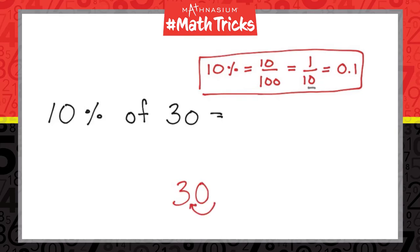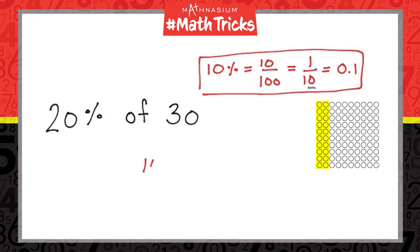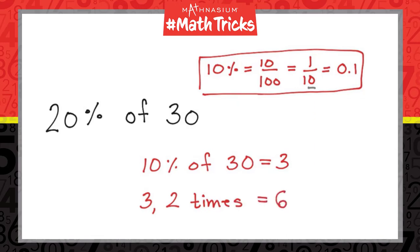10% of 30 is 3. To find 20% of 30, we take double of 10% of 30. 10% of 30 is 3, double of 3 is 6, so 20% of 30 is 6.